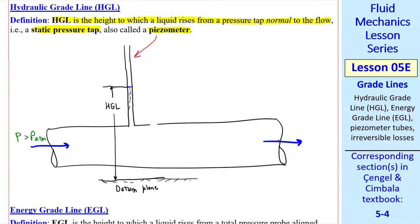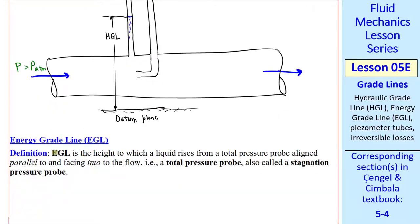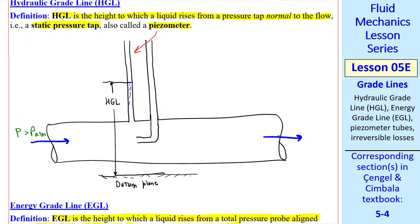Now let's add another hole, but this time let our tube protrude through the hole and then curve and point towards the flow. This will give us an energy grade line, or EGL, which is the height to which a liquid rises from a total pressure probe aligned parallel to and facing into the flow, which is what we have here. This is also called a total pressure probe, or a stagnation pressure probe. The pressure here will be higher than the pressure here, because this feels the full impact of the flow hitting it, whereas here the flow is just passing by. Again the water will rise in this tube, but now to some higher elevation. And this is what we call the EGL, relative to the same datum plane.